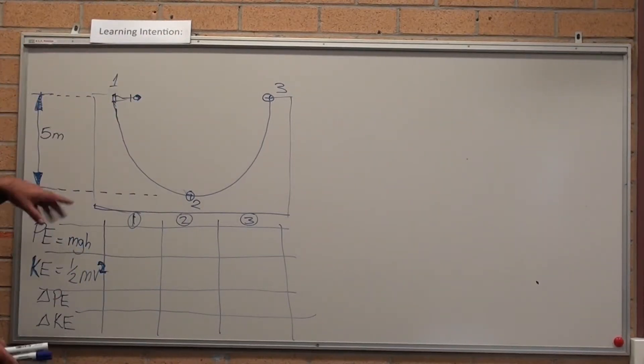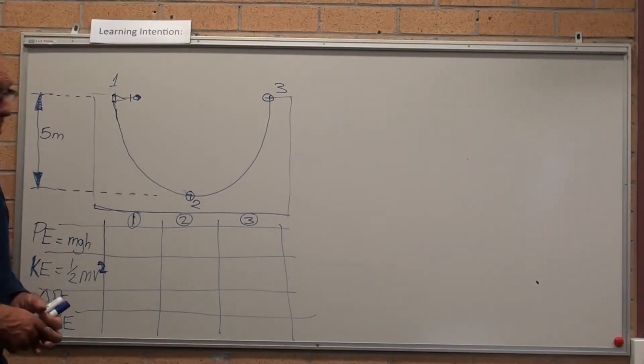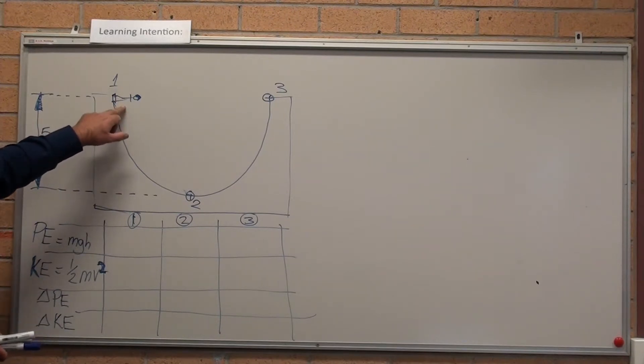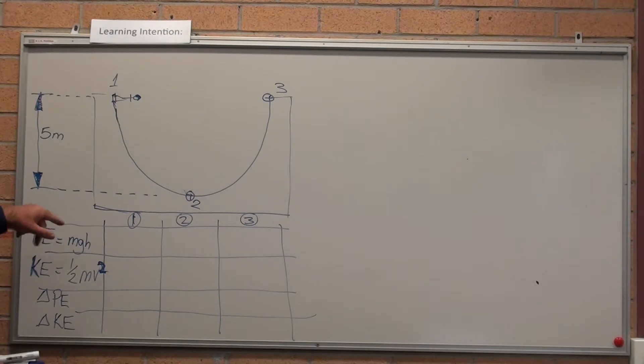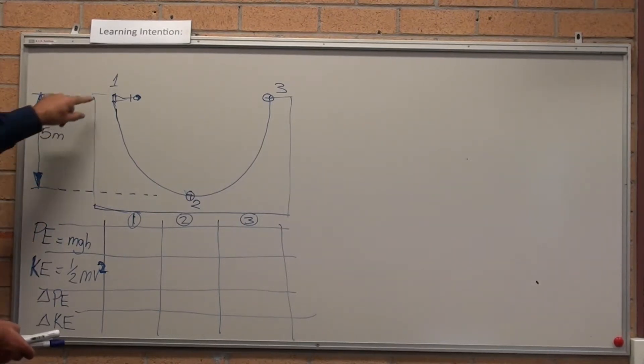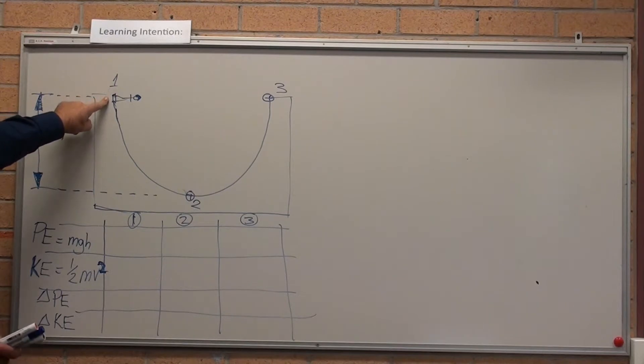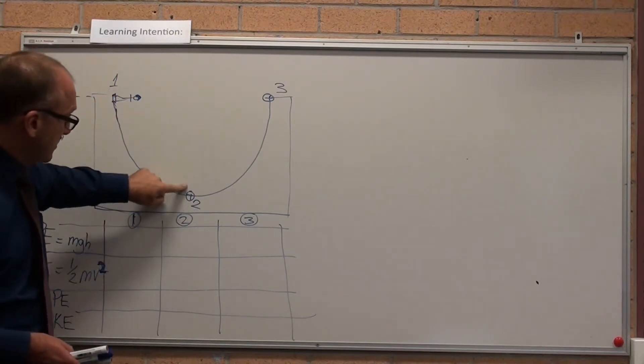Let's have a quick look at another worked example. Here's a beautiful halfpipe, and here's our Olympic level skateboarder sitting up the top of it. It's five meters deep. So now one end of the halfpipe, he's sitting up the top, and let's pretend he's not moving at all.